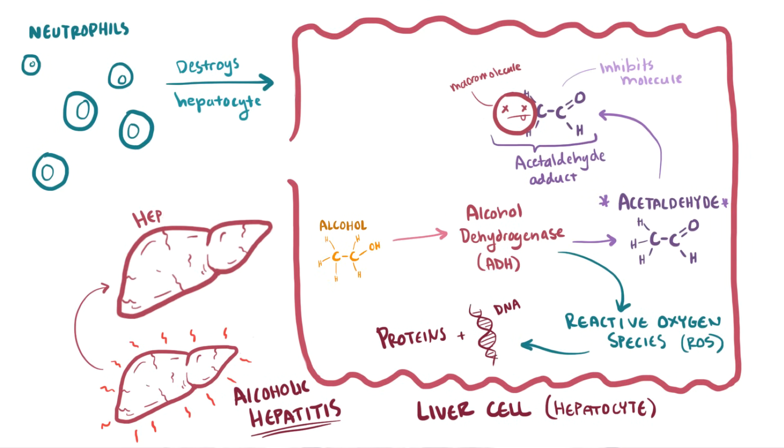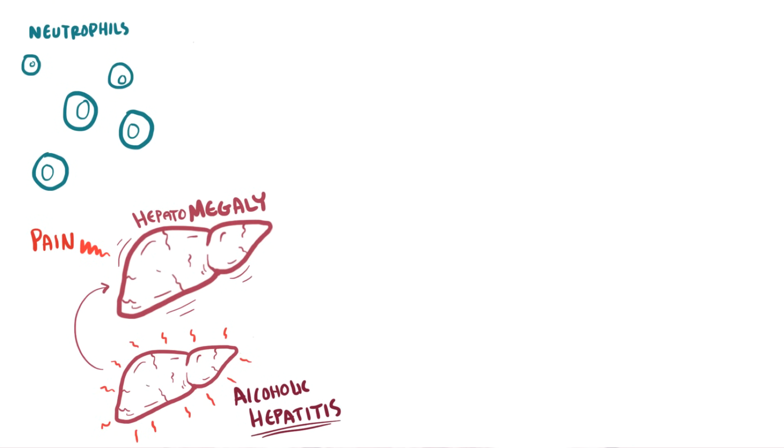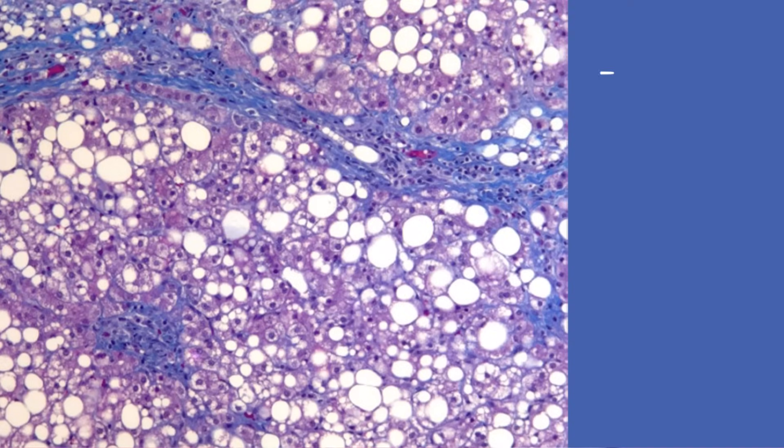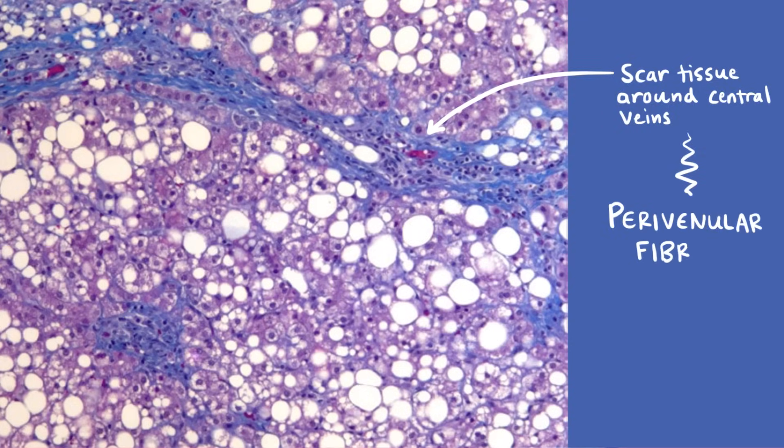At this point the patient might have hepatomegaly that's probably become painful, since the liver is seeing more and more immune cells. They also may have neutrophilic leukocytosis, or an increased amount of neutrophils in the blood. Also, as cells become damaged and die off, scar tissue starts to form around the central veins of the liver, known as perivenular fibrosis.